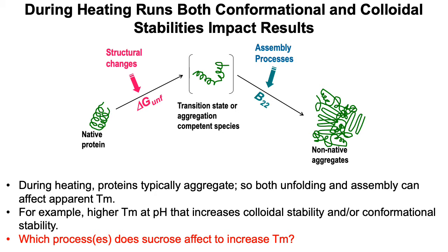Just keep in mind, when you have a heating study, you get both unfolding and aggregation for most of the molecules we work on. So either the free energy of unfolding, the native state stability, and interactions between molecules can be the governing effect. If you're doing a study across pH, you may find the impact of pH at both steps, and that can help you find the optimal pH for a protein. If we put sucrose in the formulation, it most likely will influence this step by increasing the native state stability of the protein.